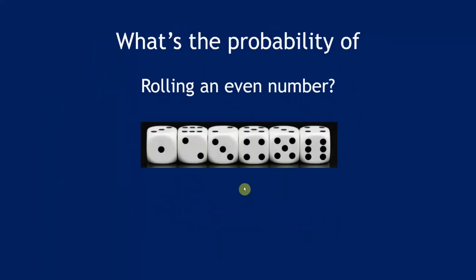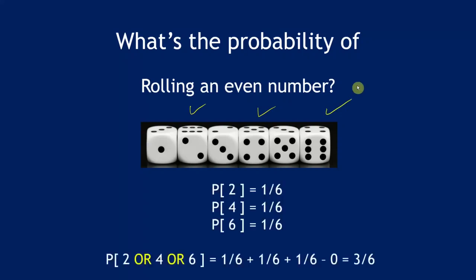For the probability of rolling an even number, the even numbers are 2, 4, and 6. These are mutually exclusive events, so applying the addition rule with zero overlap, we add the three events together: 1/6 + 1/6 + 1/6 = 3/6. Did you get those answers correct?